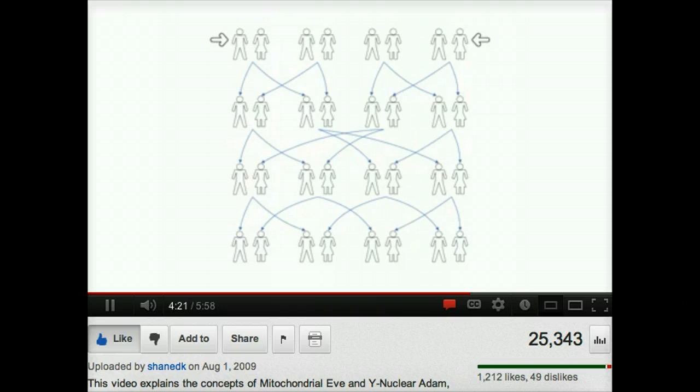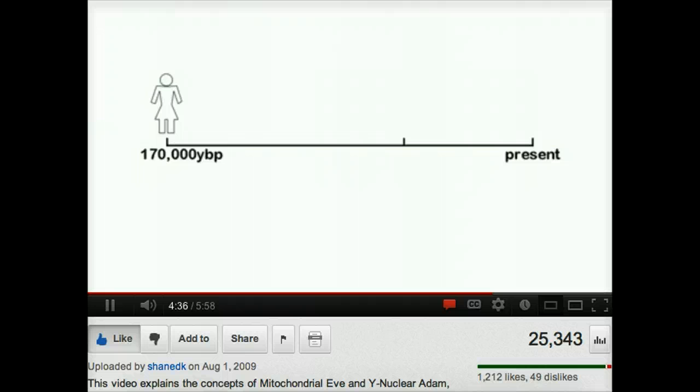But more than that, the real mitochondrial Eve and Y-chromosomal Adam didn't even exist at the same time. The real mitochondrial Eve has been traced back to 170,000 years ago, but Y-chromosomal Adam wasn't to be born for over a hundred thousand years—he was only born 60,000 years ago.